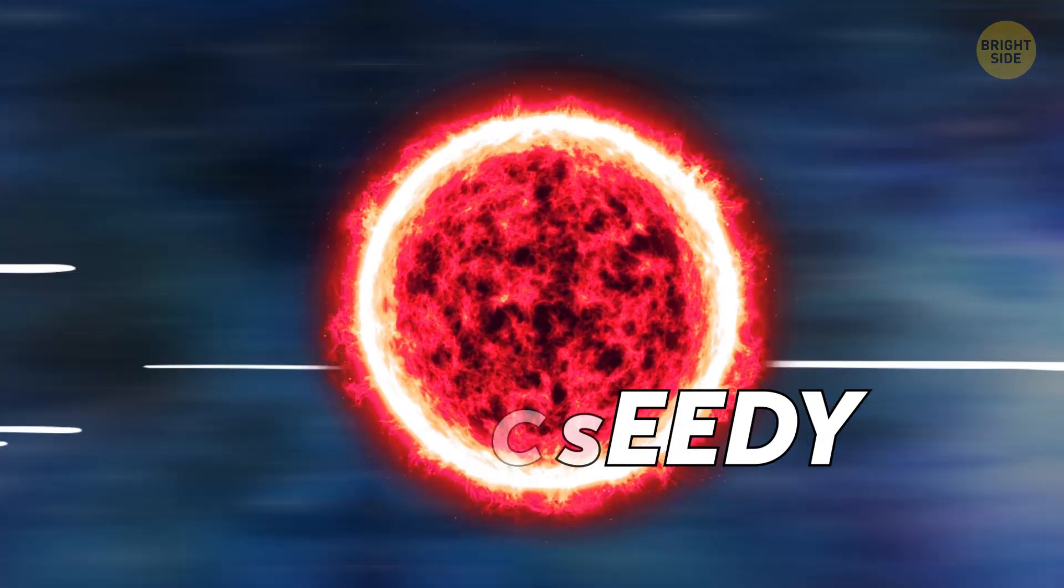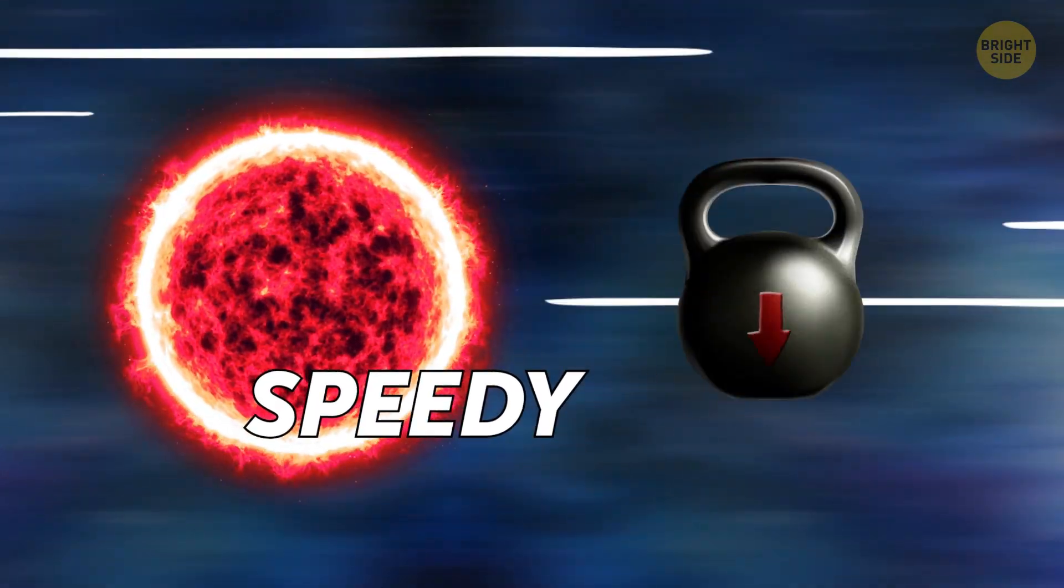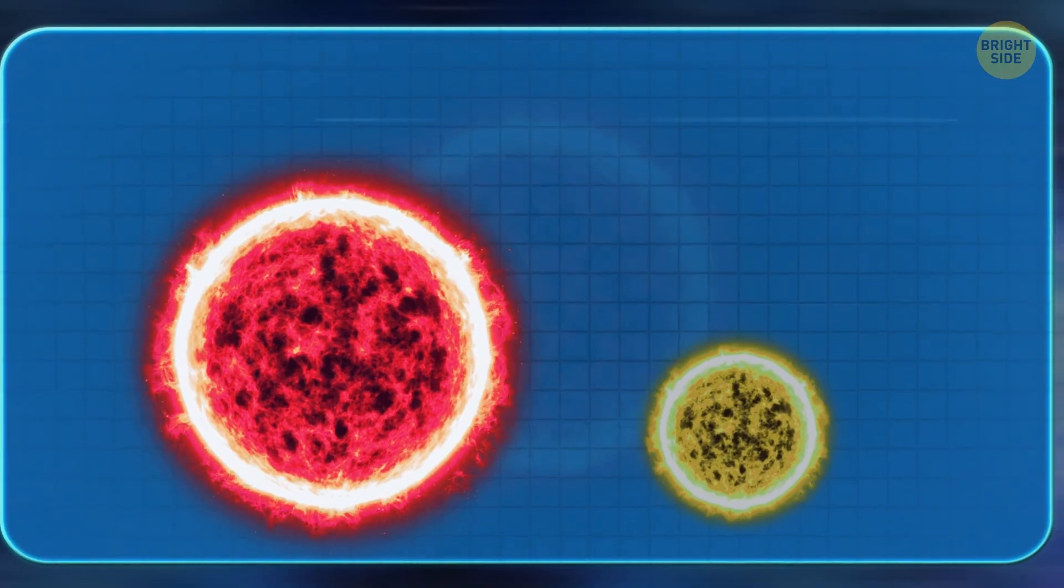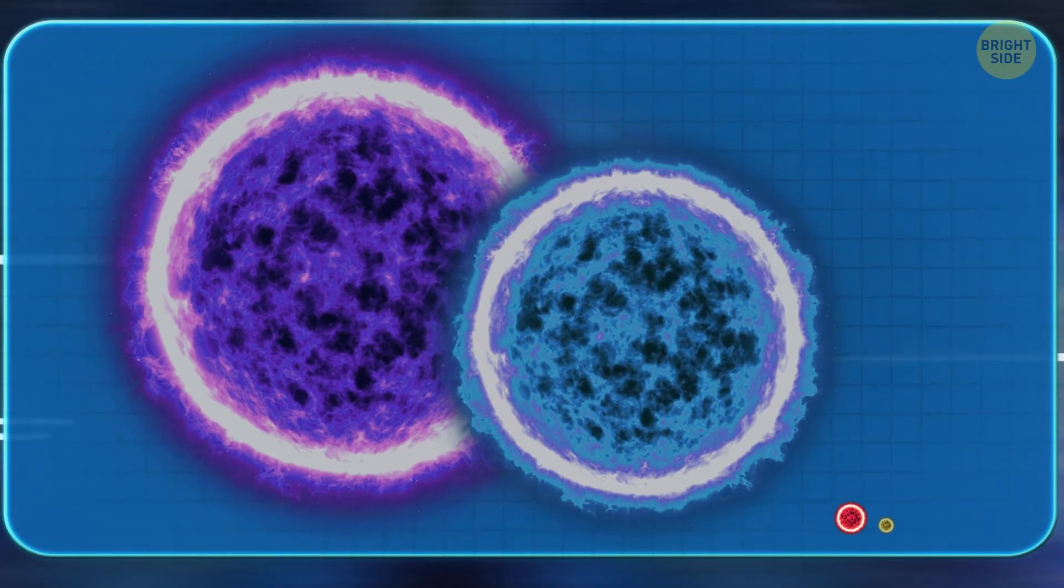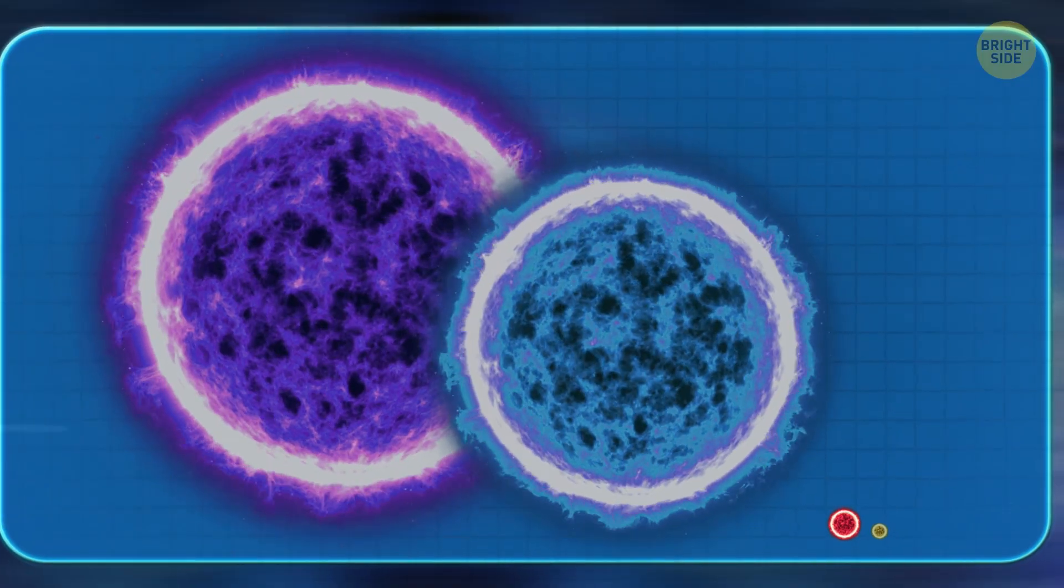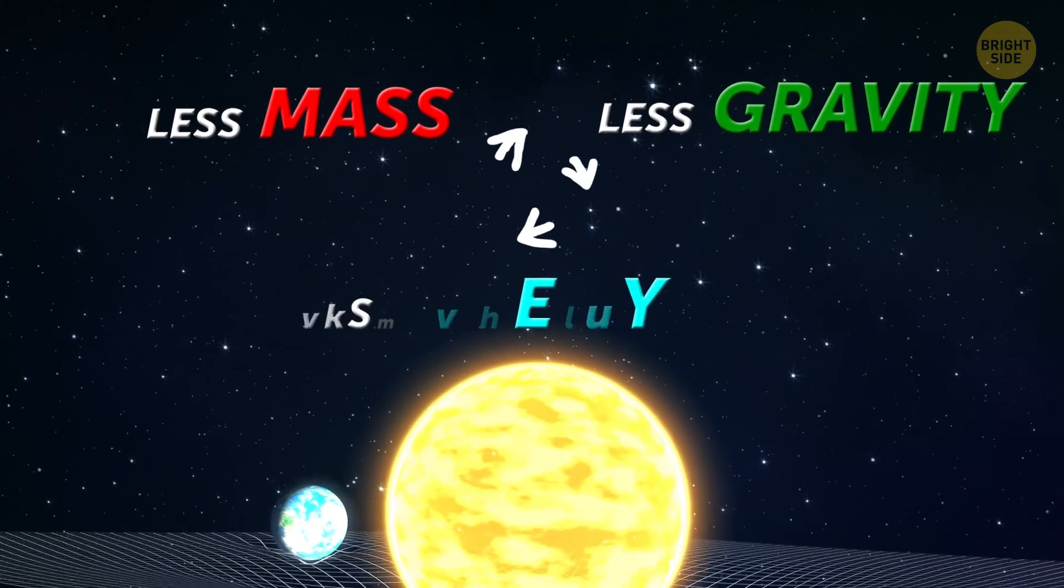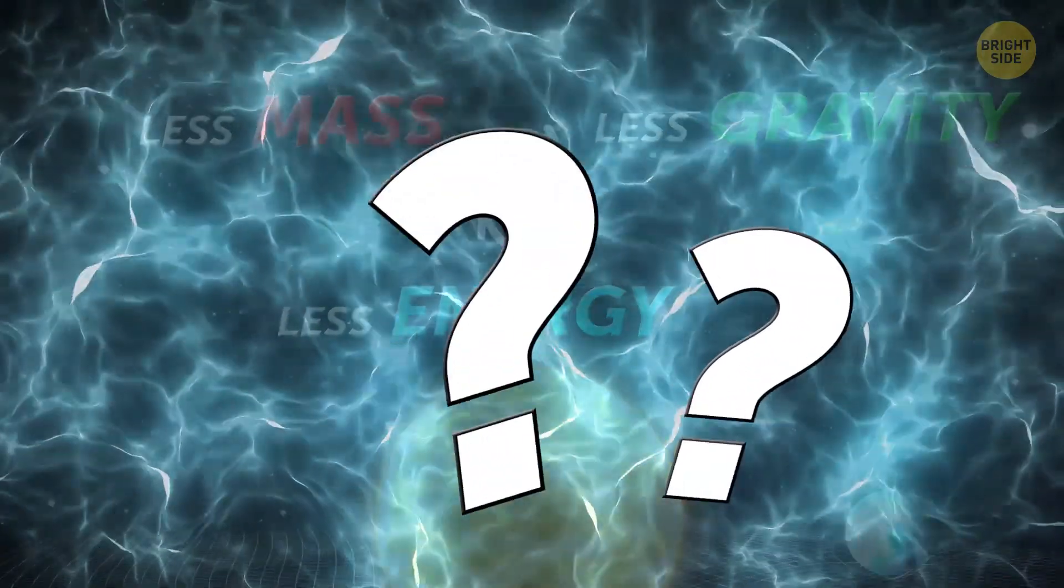What differentiates speedy from the other black hole ejections is the star's comparatively low mass. Despite being more massive than our own sun, it's a shrimp compared to the much larger blue and ultraviolet stars more commonly seen in such events. Less mass means less gravity, which in turn means less energy propelling the star. And it took a lot of energy to expel speedy at its current speed.